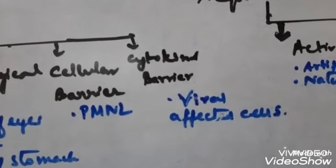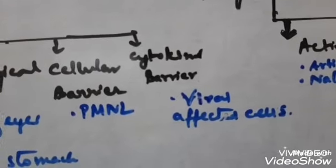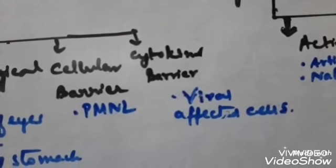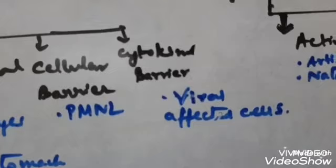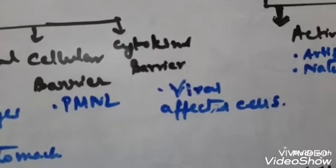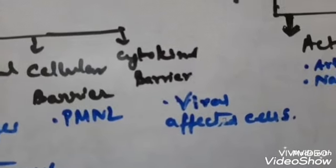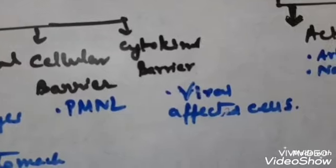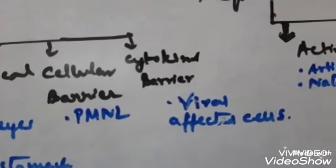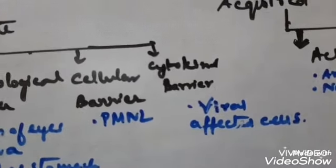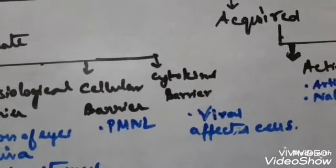Next comes the cytokine barrier. When cells are attacked or infected by a virus, these infected cells release proteins called interferons. These interferons protect the non-infected cells from further viral infection — that is called the cytokine barrier.